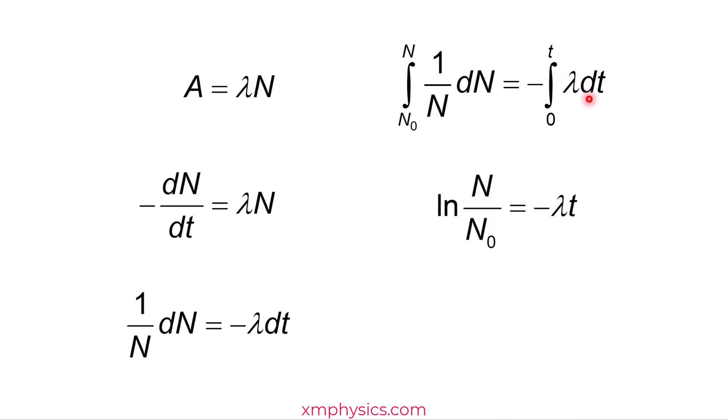Lambda is the decay constant, which is a constant. So when you integrate this thing, all you get is lambda T. Throw the ln over to the other side and it becomes the exponential function. So ta-da!